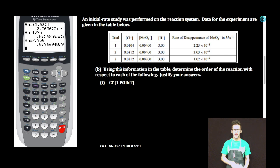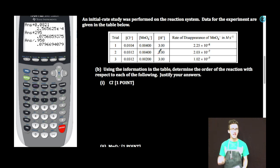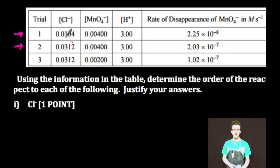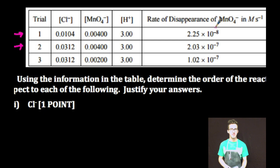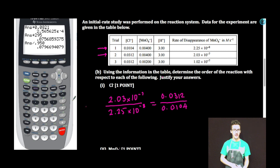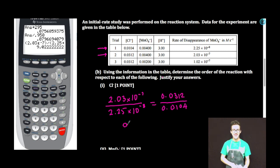Chloride ion. As I decide which trials to use, I want to make sure that only the chloride ion concentration is changing and the concentrations of other species are held constant, so any changes in rate are due to changing that chloride ion concentration. I'm going to use trial one and trial two. The concentration of chloride ion goes from 0.0104 to 0.0312, and the rate goes from 2.25 times 10 to the minus 8 to 2.03 times 10 to the minus 7. Dividing the two rates, the rate has increased ninefold.